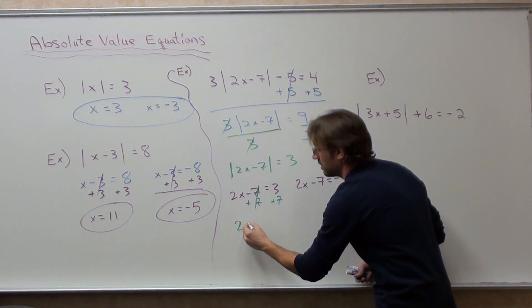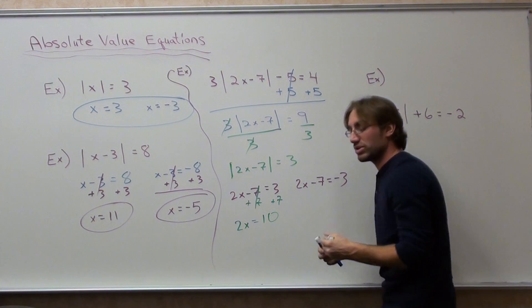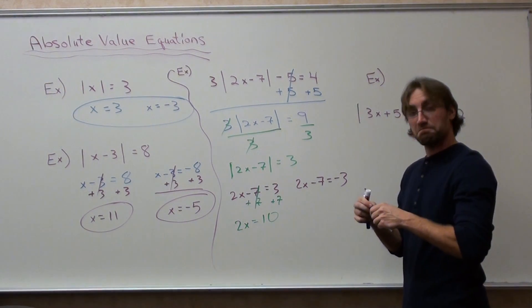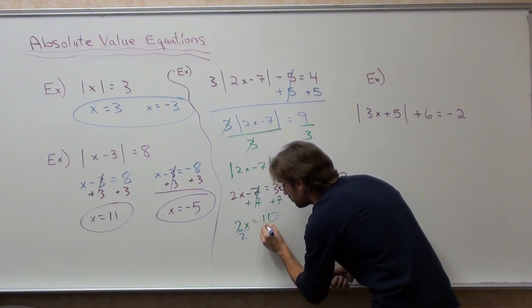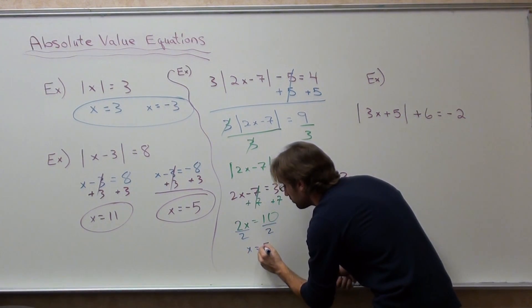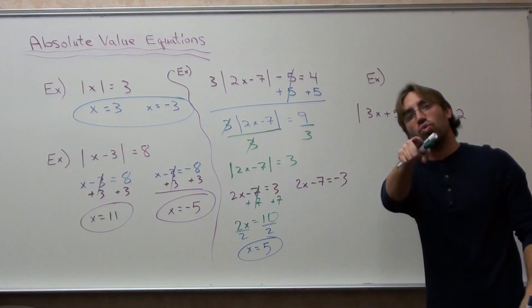That's a seven. It doesn't look like one. Two x equals ten. Divide by two. X equals five is one of the answers.